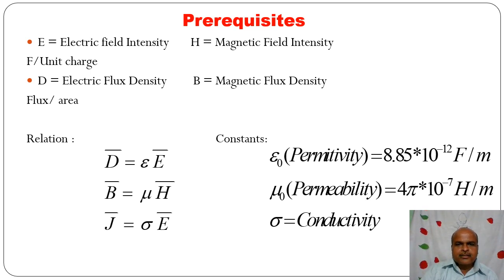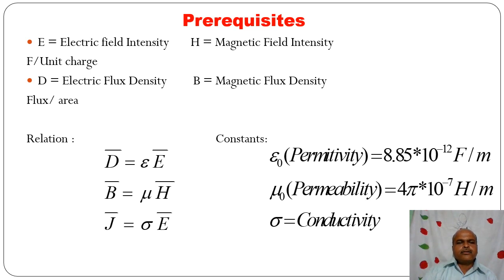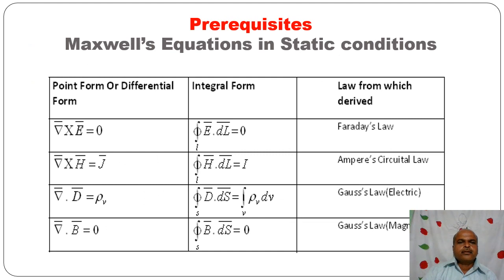After the syllabus introduction, certain prerequisites are reviewed from third-year Electromagnetic Engineering. We studied: E is electric field intensity, H is magnetic field intensity, D is electric flux density, B is magnetic flux density, and their relations. These relations are very important: D = εE, B = μH, J = σE, where ε₀ is permittivity, μ₀ is permeability, and σ is conductivity. These are constant values.